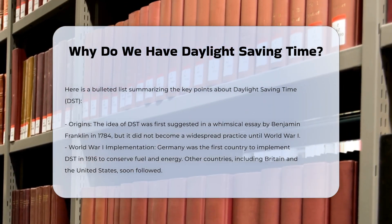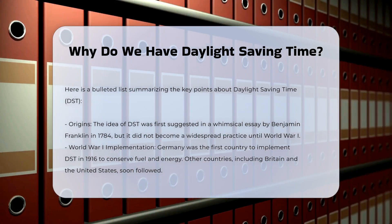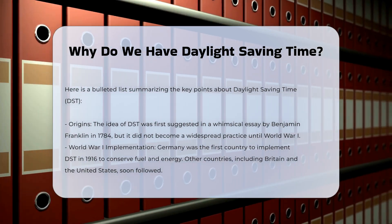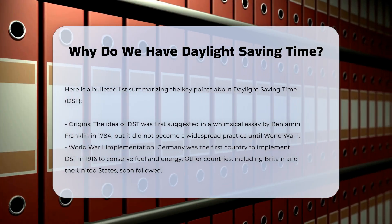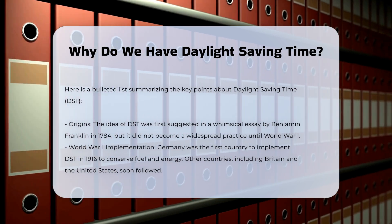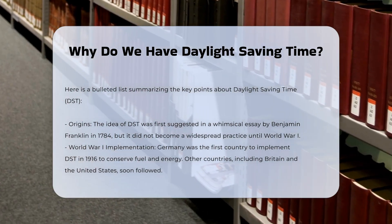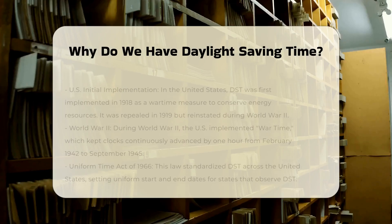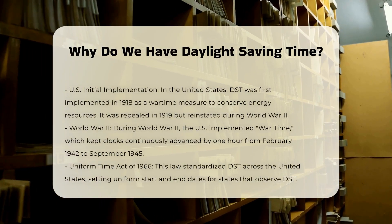In the United States, DST was first implemented in 1918 as a wartime measure to add more daylight hours and conserve energy resources. This practice continued sporadically until the Uniform Time Act of 1966, which standardized DST across the country.